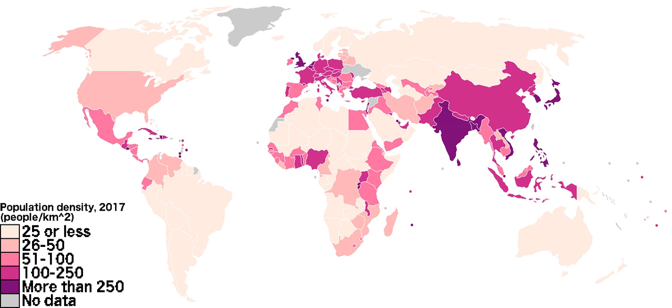Population: 506,913,394 on January 1, 2014. Area: 4,324,782 square kilometers. See also: list of regional organizations by population. Area includes land and water.